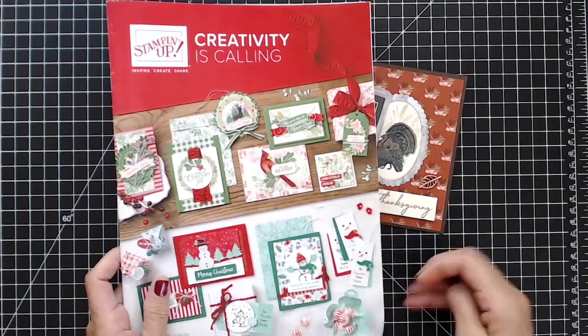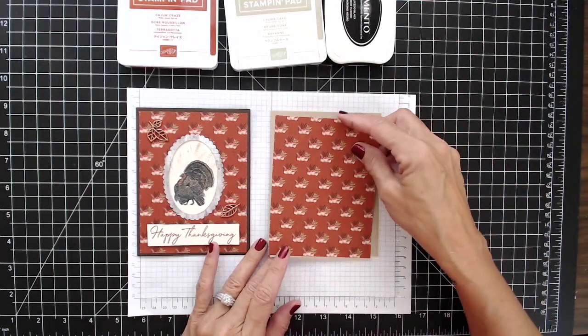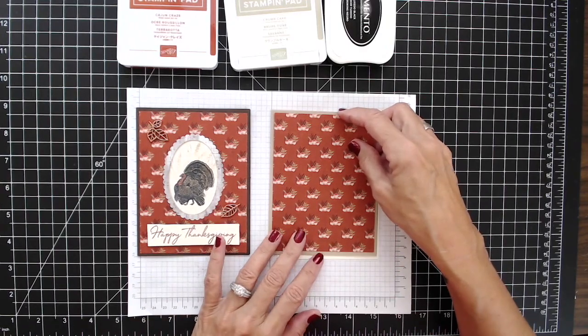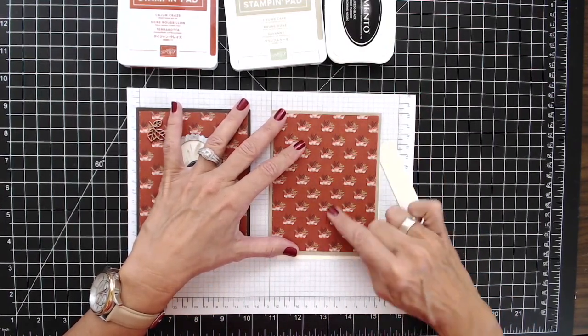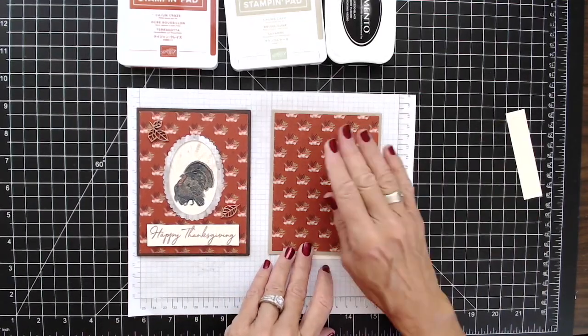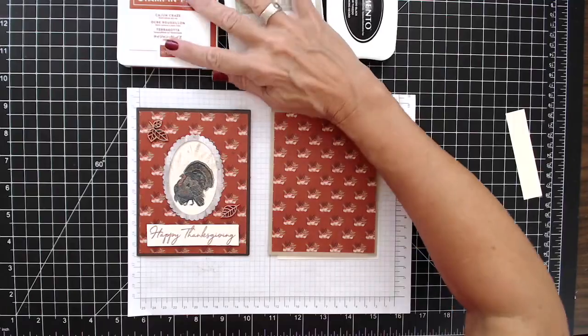So anyway, enough of that, let's get started. Before we actually get started with our stamping, we're going to go ahead and we're going to cut out the front, we're going to cut out our peek-a-boo hole. So let me bring my Big Shot in and I'll show you what we're going to do to do that.